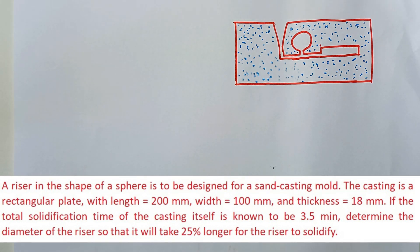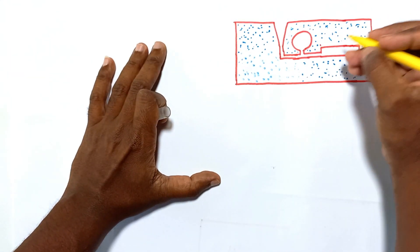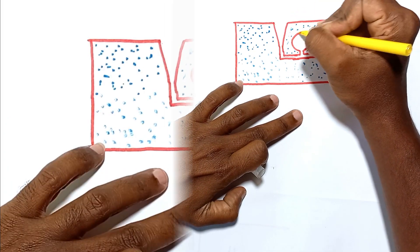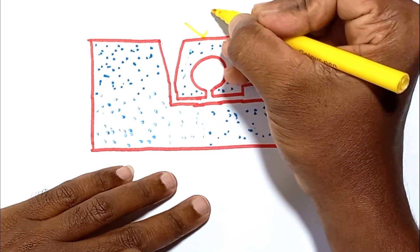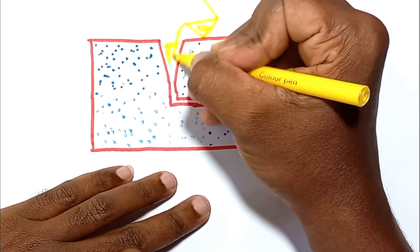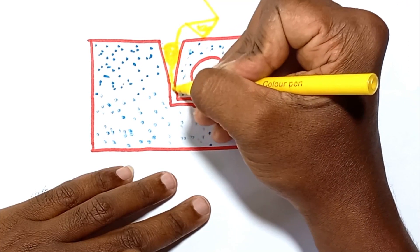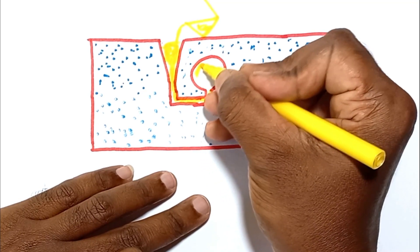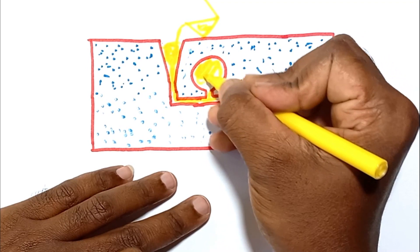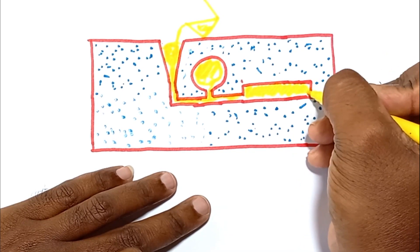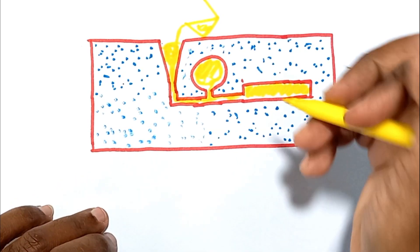This is the mold for this solution. This is the casting — the rectangular plate — and this is the spherical riser. The molten metal when poured enters first due to gravity into the runner system and the main runner, then enters the riser and at the same time enters the cavity — the product cavity area.